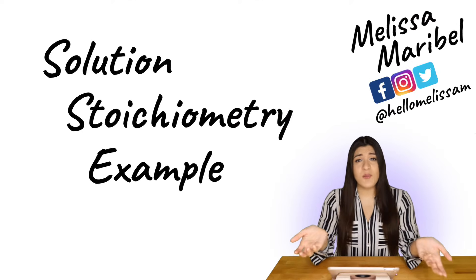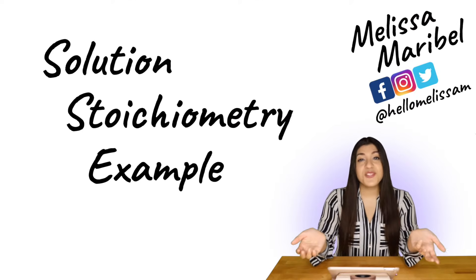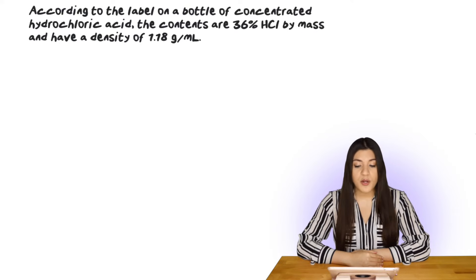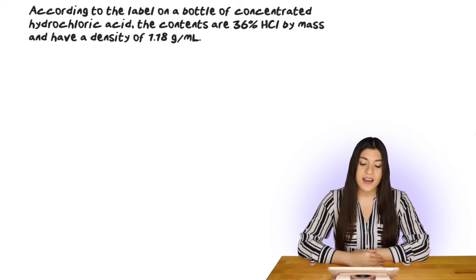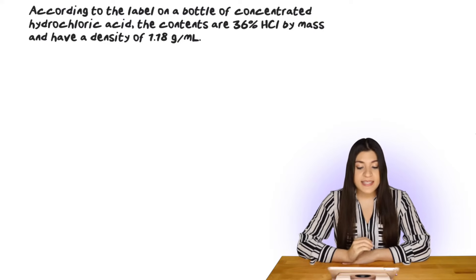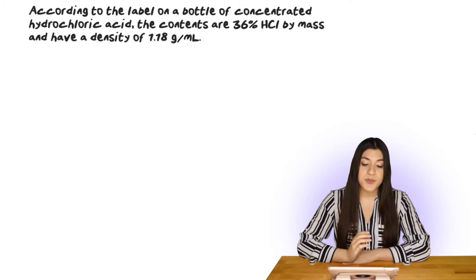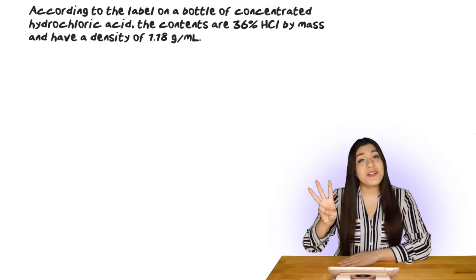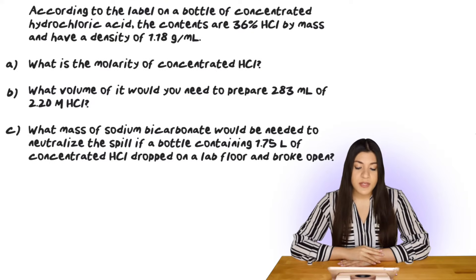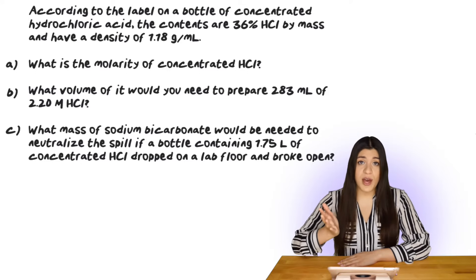We're focusing on an example of solution stoichiometry. Our example states: according to the label on a bottle of concentrated hydrochloric acid, the contents are 36% HCl by mass and have a density of 1.18 grams per milliliter. We're asked three different questions. Our first one is: what is the molarity of the concentrated HCl? Let's start off with that one.